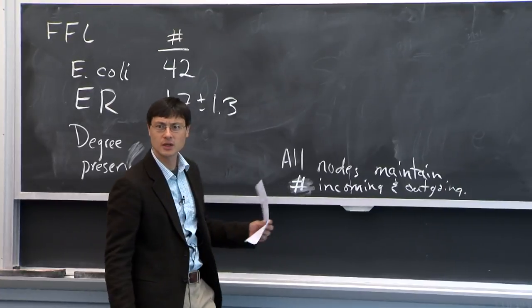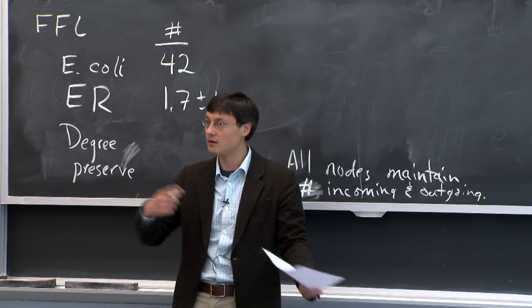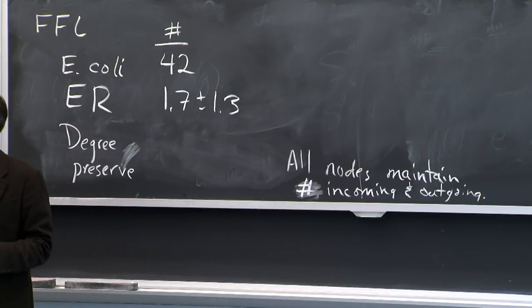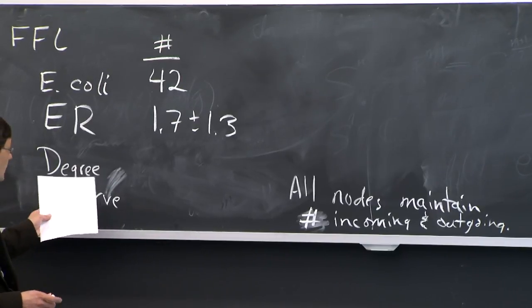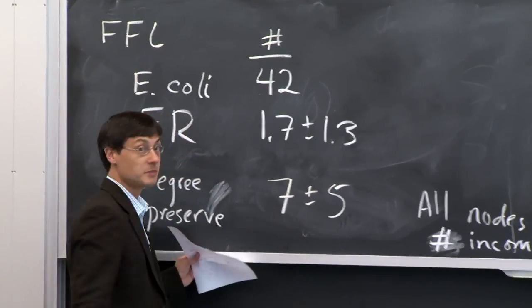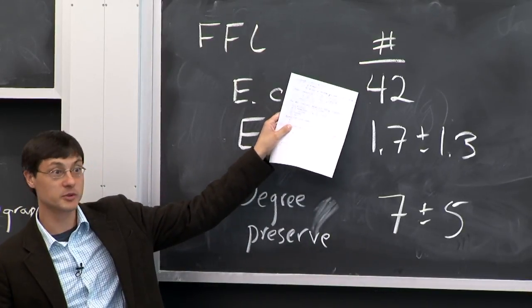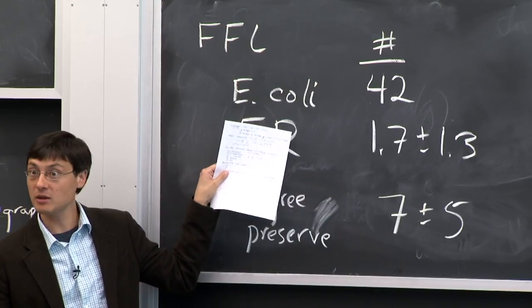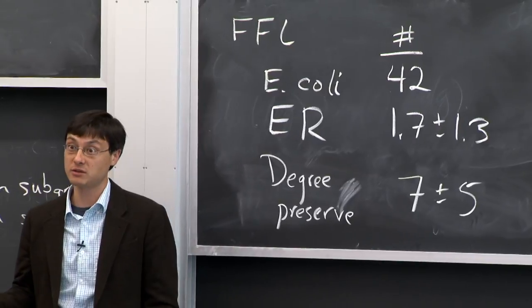This makes a big difference. If the experimentally observed network had only 10 feed forward loops, you'd compare to the Erdős–Rényi expectation of ~1.7 and say it's a network motif — but comparing to the degree-preserving expectation of 7±5, you would say it's not. The actual E. coli network has 42, so it's still well above even the degree-preserving expectation.